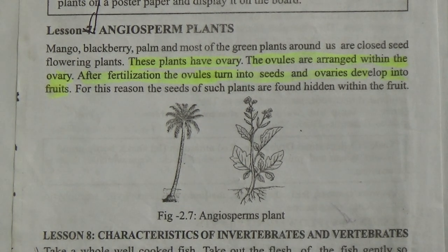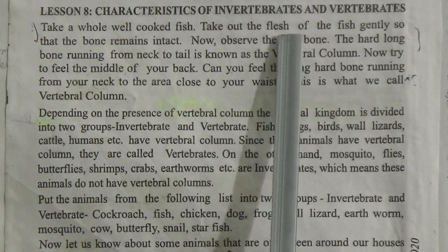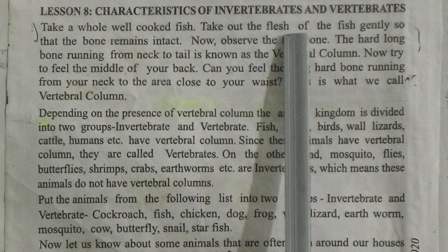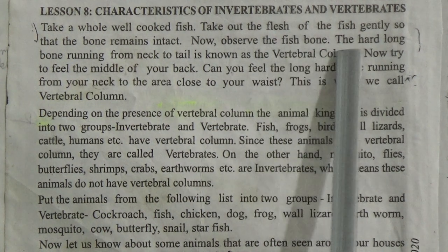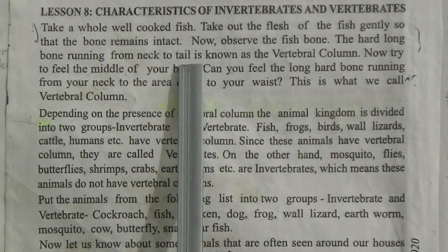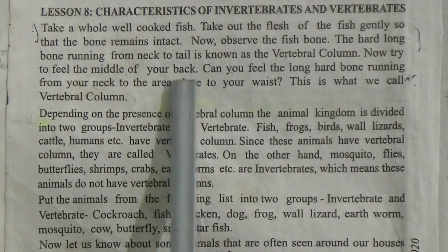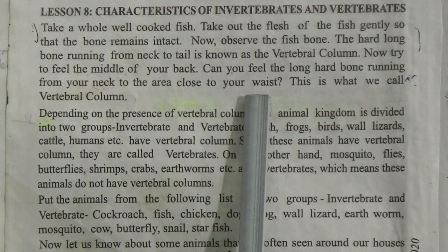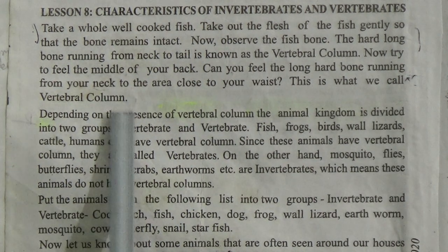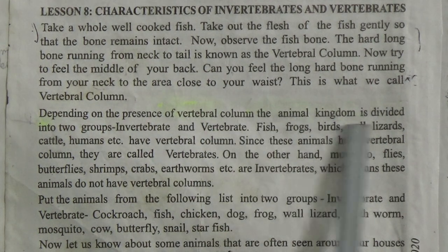Here is the picture of angiosperm plants. Lesson 8: Characteristics of Invertebrates and Vertebrates. Take a whole well-cooked fish and take out the flesh of the fish gently so that the bones remain intact. Observe the fish bone — the hard long bone running from neck to tail is known as the vertebral column. Now try to feel the middle of your back. Can you feel the long hard bone running from your neck to the area close to your waist? This is what we call the vertebral column.